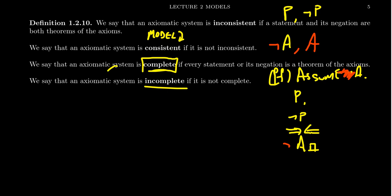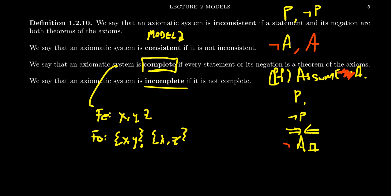For FIFO theory, there's only one model: the fees are X, Y, and Z, and the foes are XY, XZ, and YZ, where belonging is just set containment. Up to isomorphism, every model is this model. It's a complete theory.